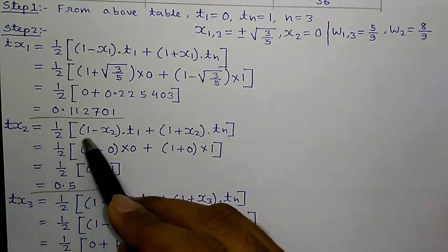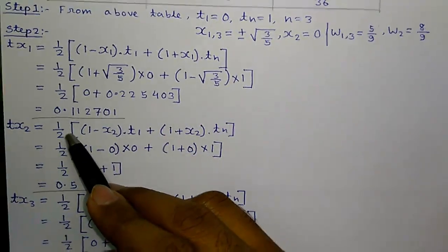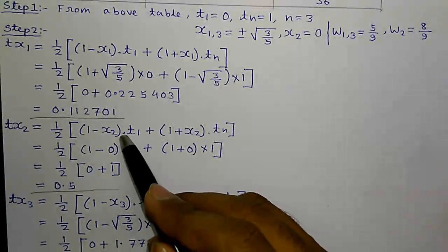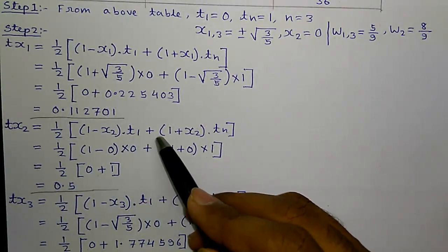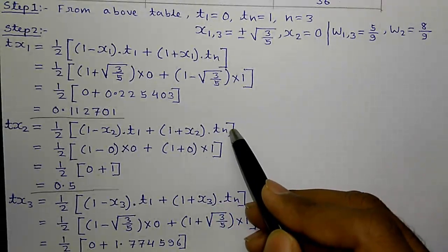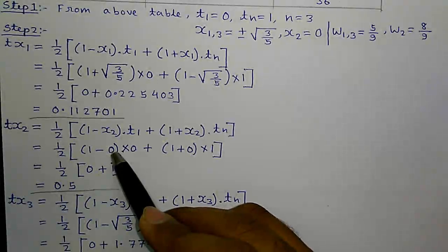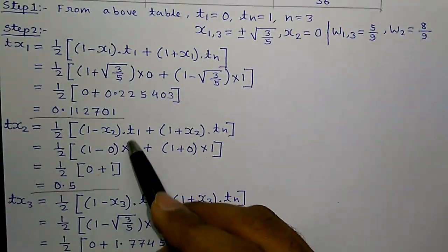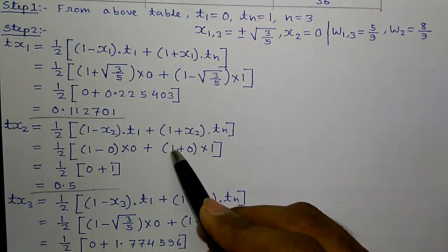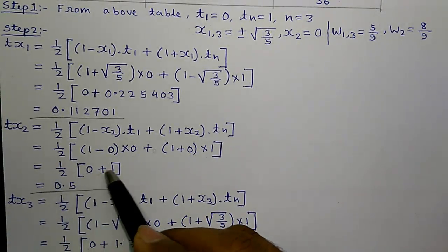tx2 equals to half into 1 minus x2 times t1 plus 1 plus x2 times tn equals to half into 1 minus 0 since x2 is 0 times t1 plus 1 plus 0 times tn equals to half into 0 plus 1.